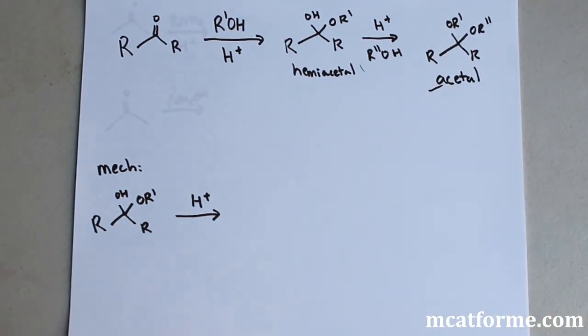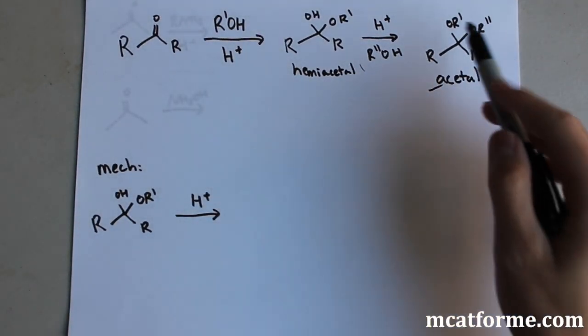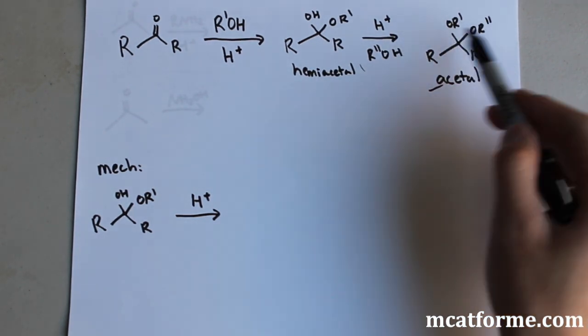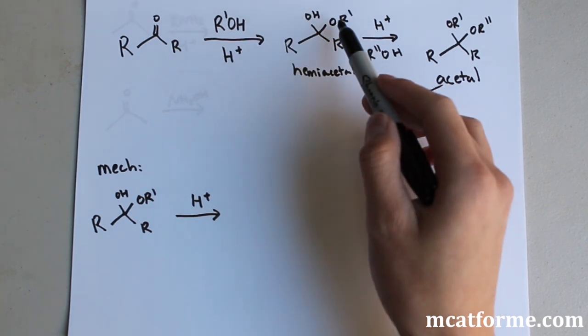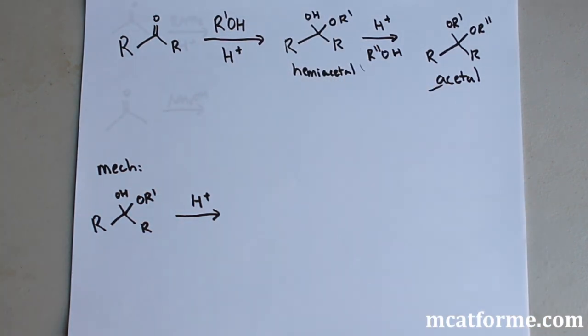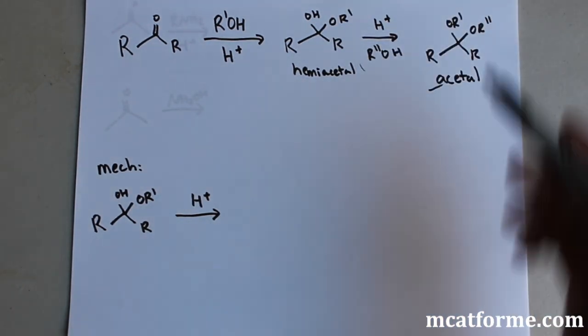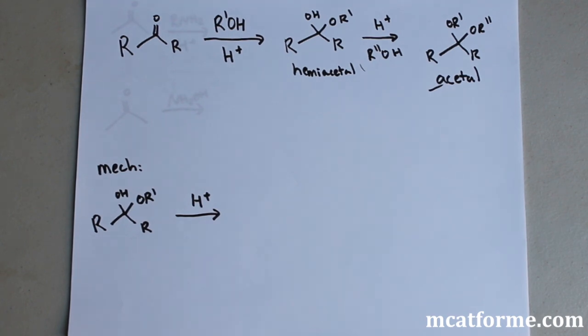So it's important to distinguish between a hemiacetal and an acetal. In the acetal we have an OR, C, and another OR. In the hemiacetal we have an OR, C, and OH. So we can think of hemiacetal as like semiacetal, which is halfway. We can think of it halfway of an acetal, which is the OH in place of that OR.